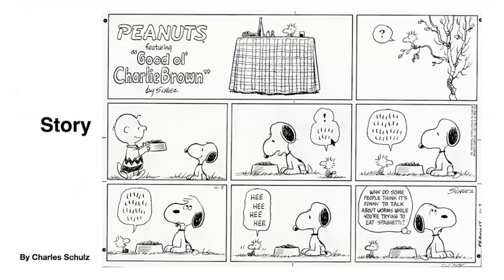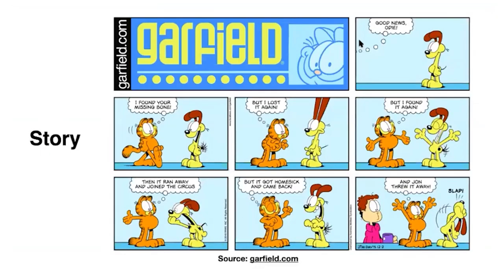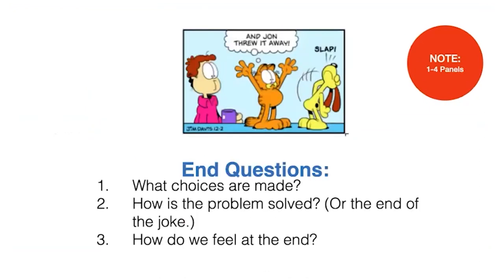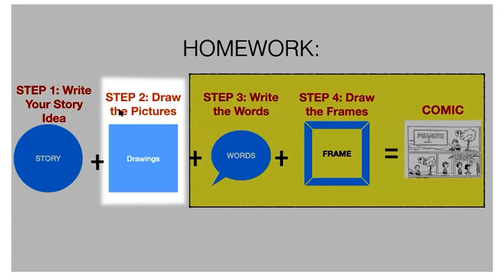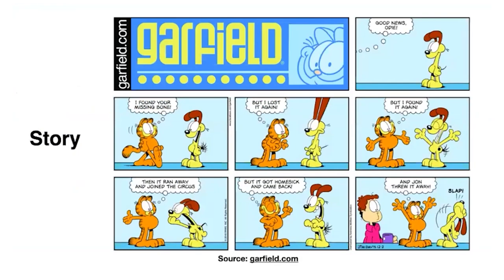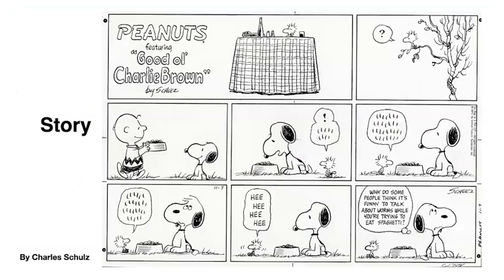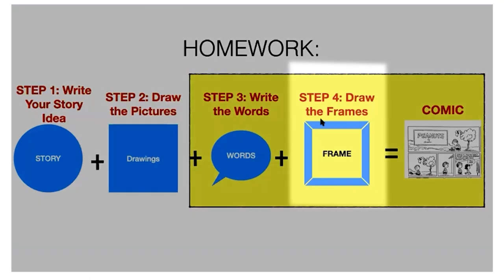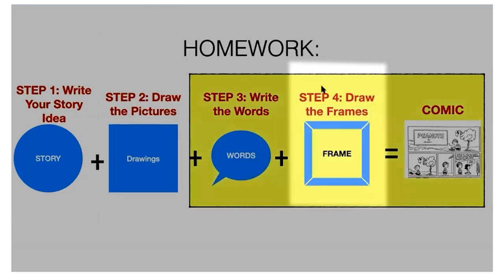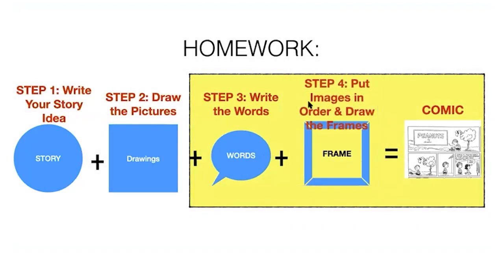Looking at the examples, there are eight panels in each comic. So overall you should have about eight to twelve panels — not too many. You can tell a very short story in a one-page comic. Your four steps: come up with the story idea, draw the pictures, then think about what words you need — sometimes you don't need many. Then look at your pictures, put them in order, and draw them in frames. After that you'll have your one-page comic.